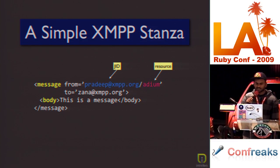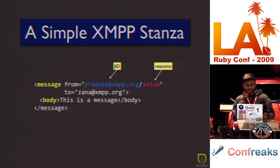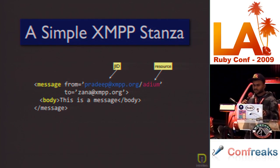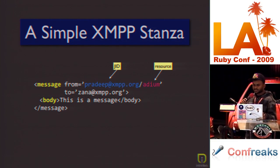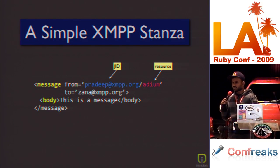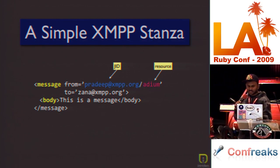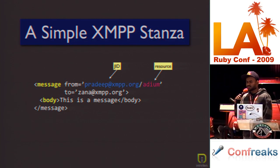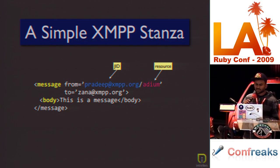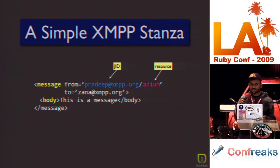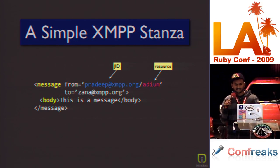A simple XMPP stanza looks like this: you have a message from a person to another person, and there's a body — that's as basic as it gets. Highlighted in blue is what they call the JID, which consists of the username and the server name — it's a unique identifier for every user. After a slash is the resource, which identifies the client connected to the server. You can have many resources, meaning you can connect using multiple clients and machines, and set priorities so certain clients get messages quicker.